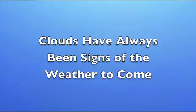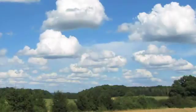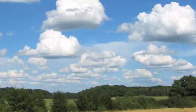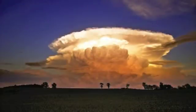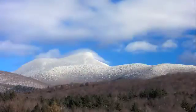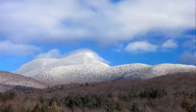Clouds have always been signs of the weather to come. For example, scattered white cumulus clusters promise a dry summer afternoon, massive dark thunderheads tell of crop-damaging wind and rain, and a high sheet of see-through wisps signals a change in the weather tomorrow or the next day.